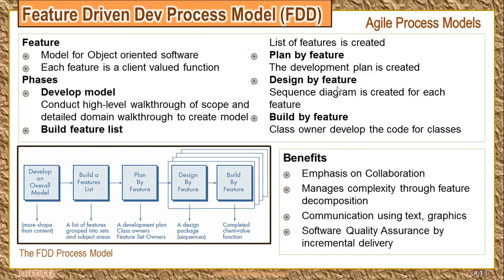The fourth phase is design by feature, where certain features are selected and sequence diagrams are drawn for them. A sequence diagram is a Unified Modeling Language diagram. Sequence diagrams are created for these features, and then the fifth phase is build by feature, which is the actual coding. This coding culminates into a complete software or part of a software, and in this way the whole development takes place.